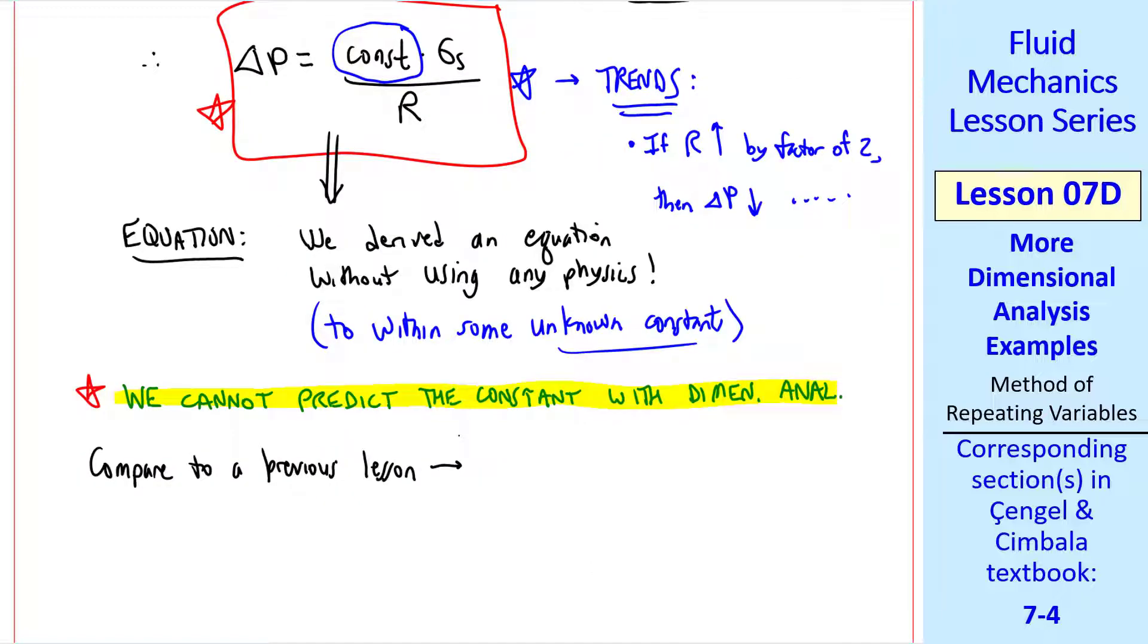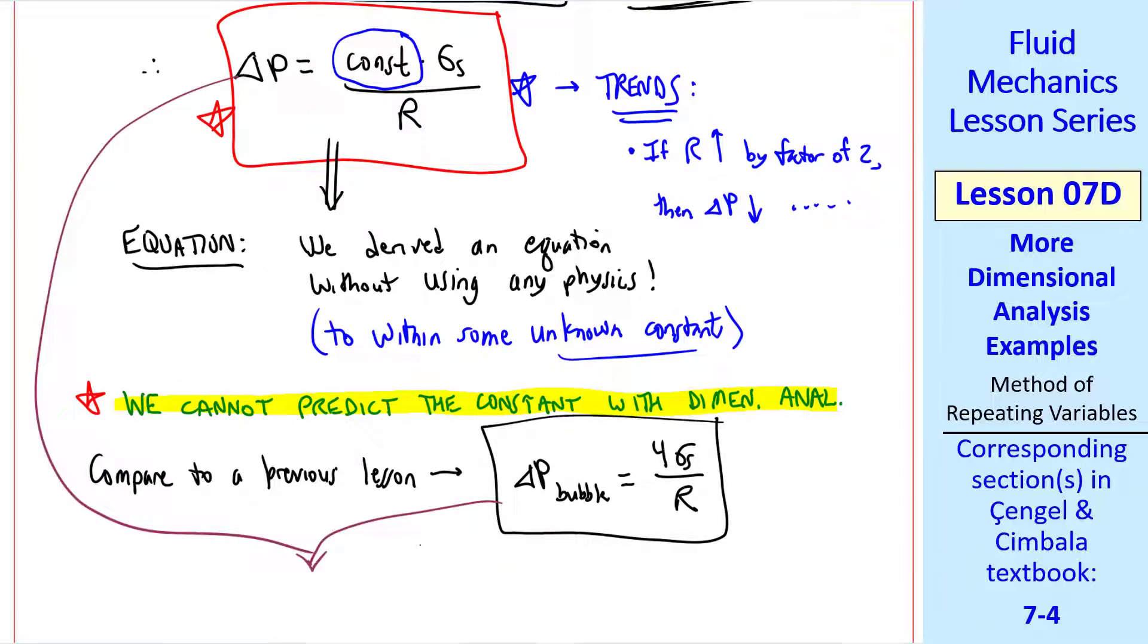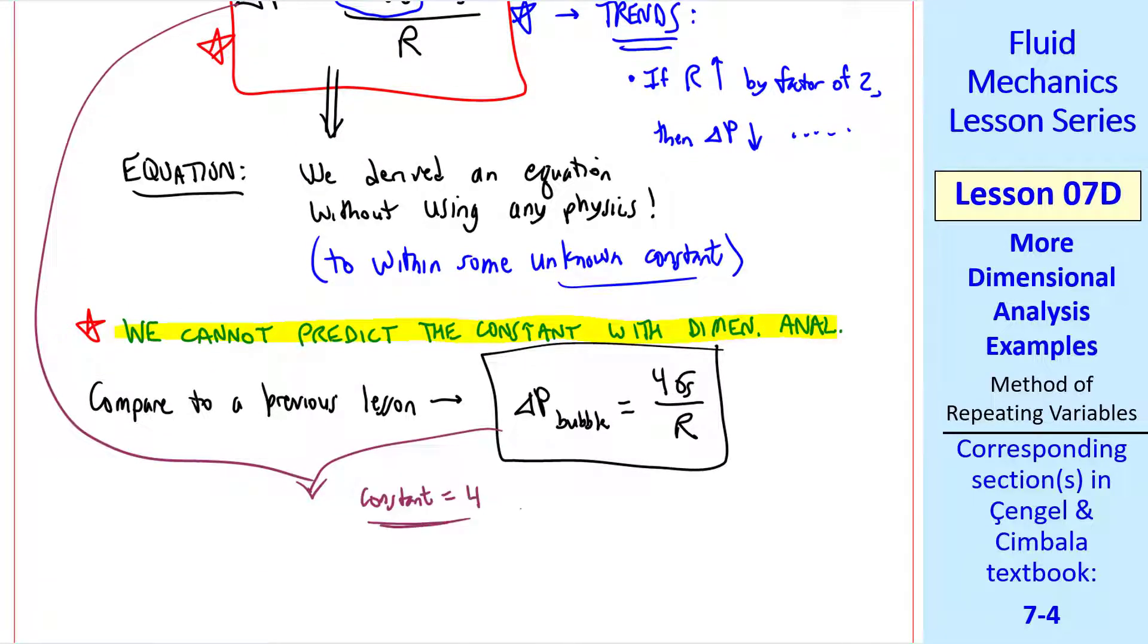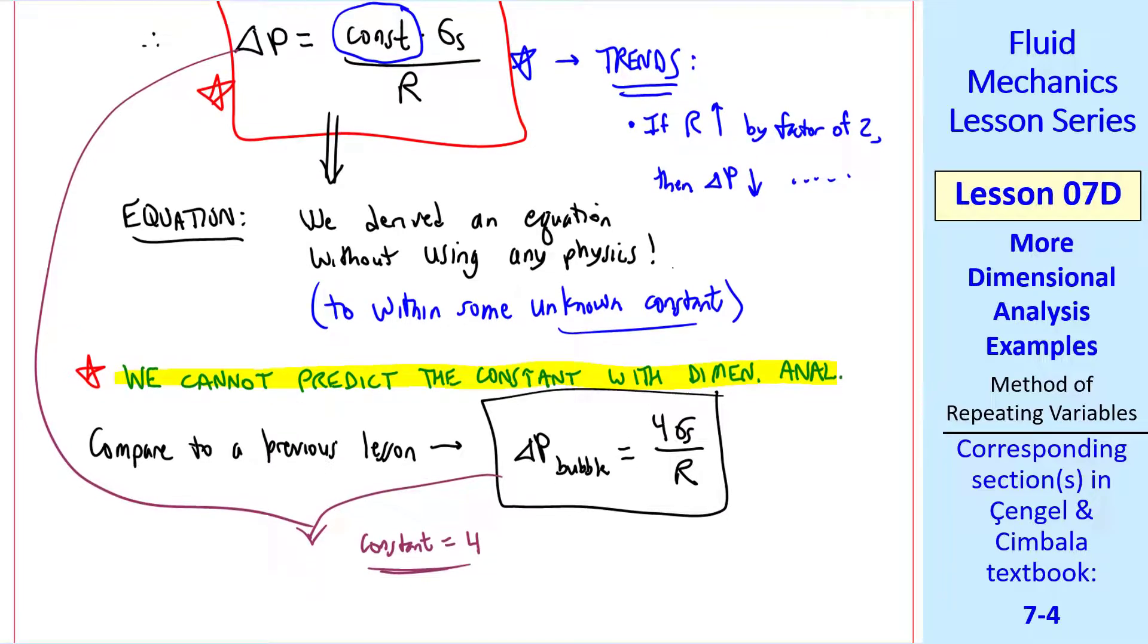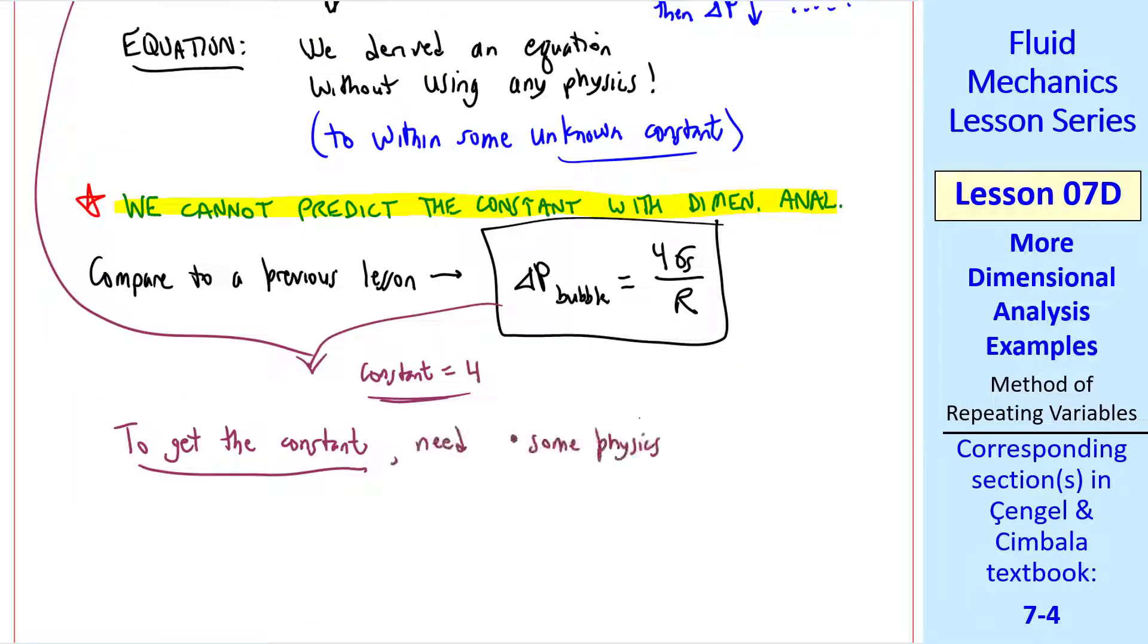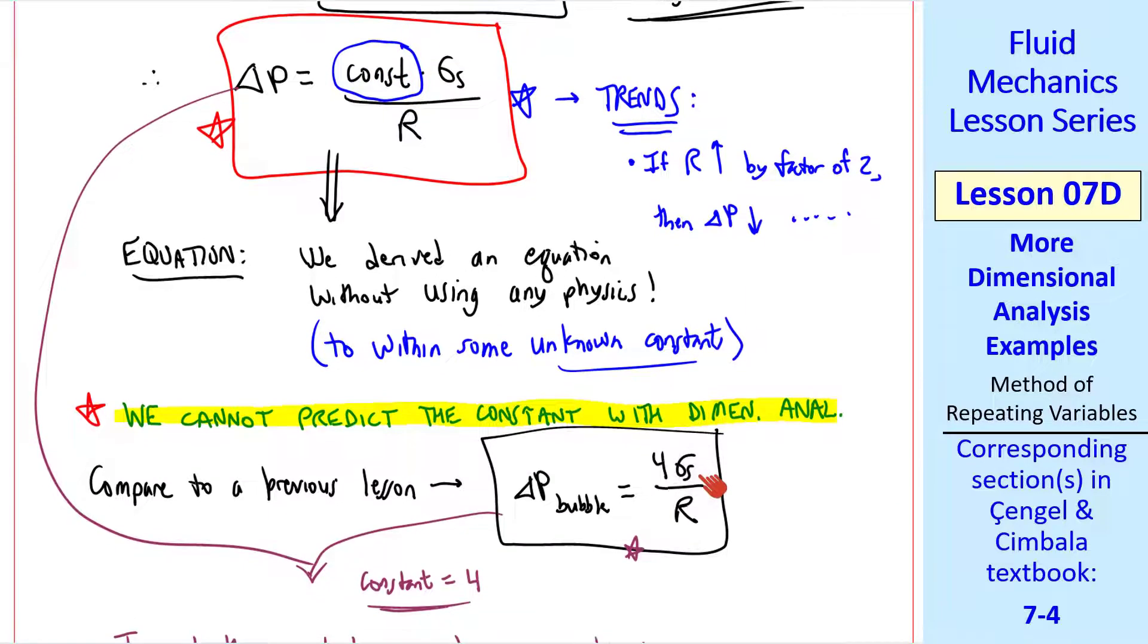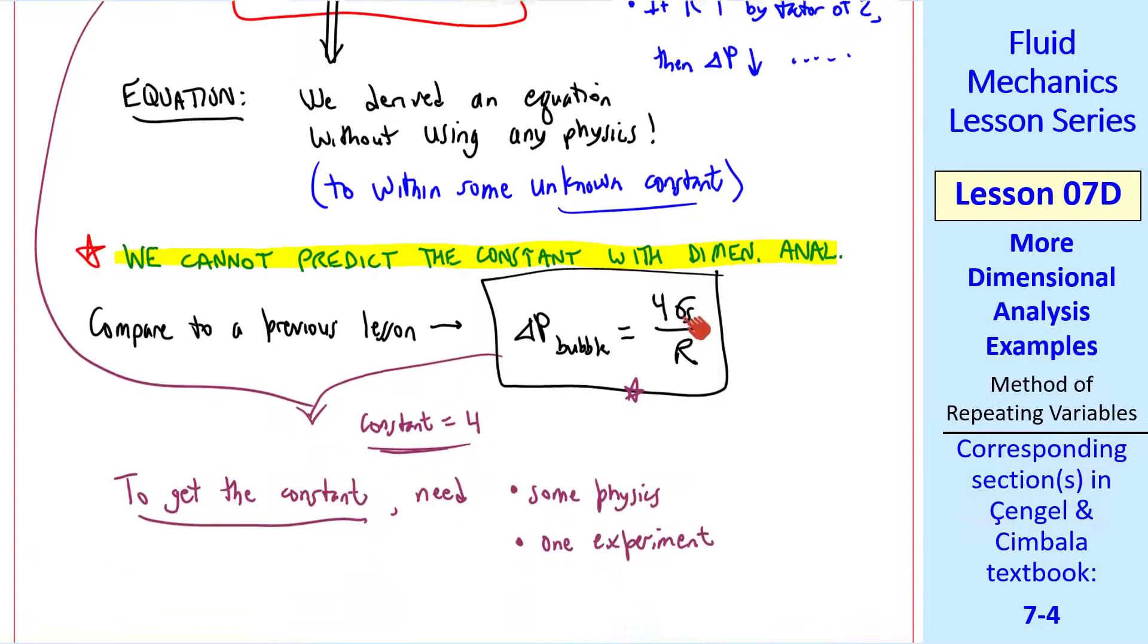Let's compare to a previous lesson where we talked about soap bubbles and surface tension. We had delta p of the bubble is 4 sigma s over r. Comparing these two, we see that the constant is 4. But again, there's no way we would know that from dimensional analysis alone. To get the constant, either some physics like we did in the previous lesson to get this equation, or one experiment, if we could measure delta p, sigma s, and r, we could calculate this constant from our experimental measurements. If you did your experiment carefully, you'd get the constant to be around 4.